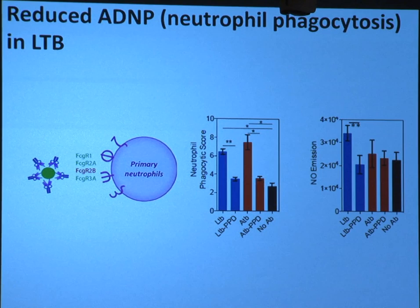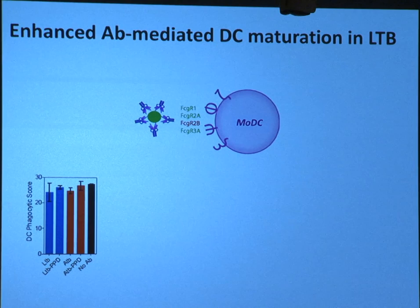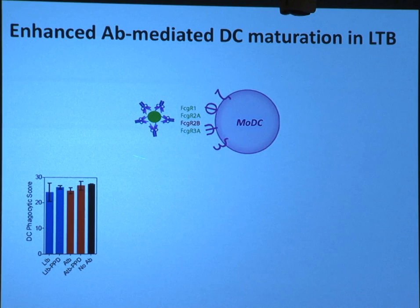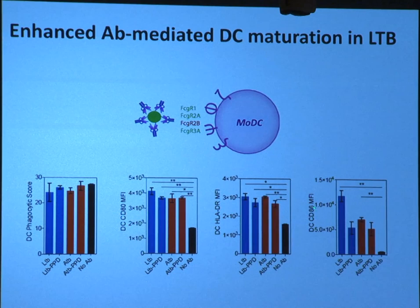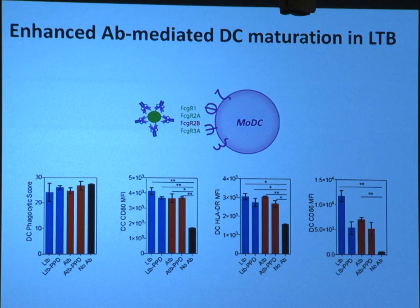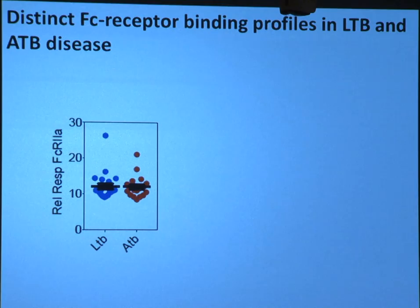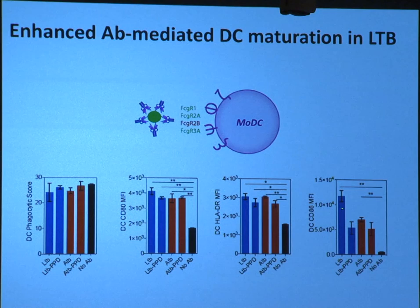What about dendritic cells? We know T cells are important in controlling tuberculosis, so do these immune complexes make any difference in how they load dendritic cells to prime more effective T cell immunity? There's really no difference in the ability of dendritic cells to pick up beads coated with any type of antibody — they pick up everything. But once they get in, we see really interesting differences in how the dendritic cells matured and how well they upregulate co-stimulatory molecules like CD86, where only the latent antibodies were able to arm the dendritic cells to present antigen in a form that will truly induce more effective T cell immunity.